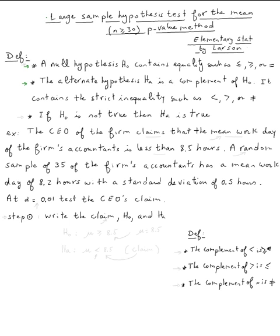The logic here is: if h sub zero is not true, then h sub a is true, because one is the complement of the other one. So let's do this example.